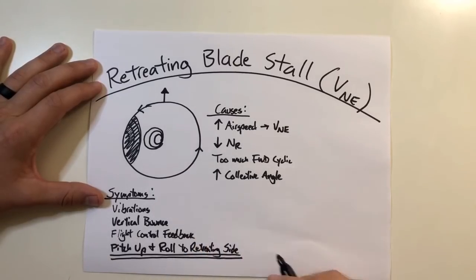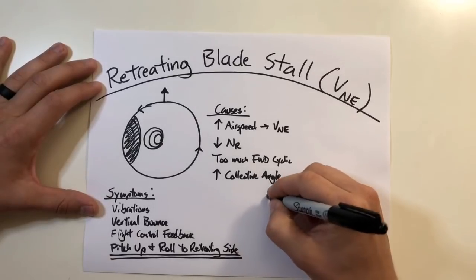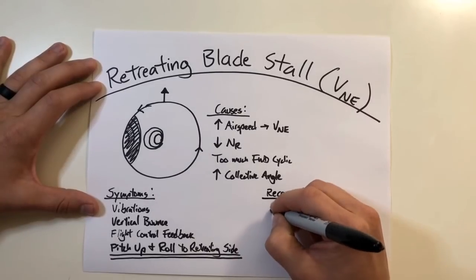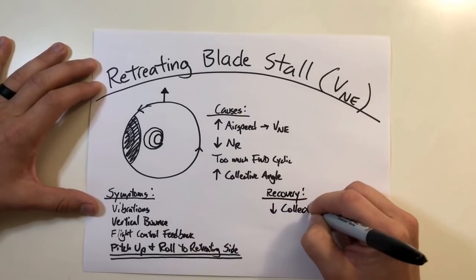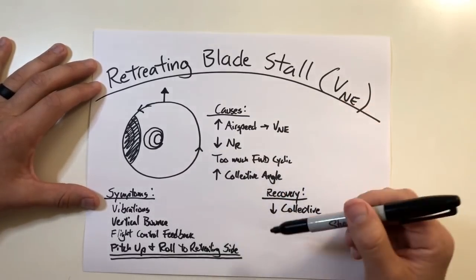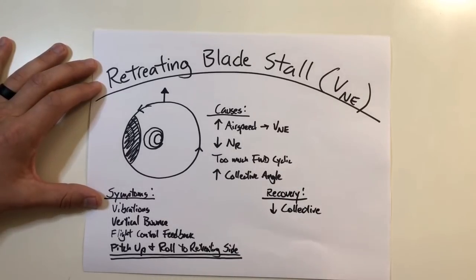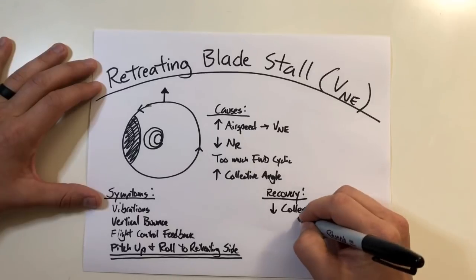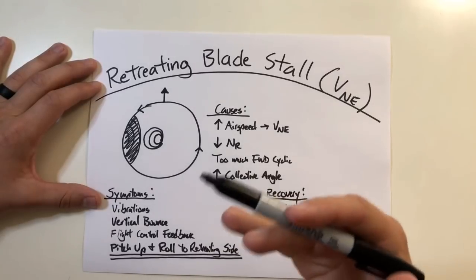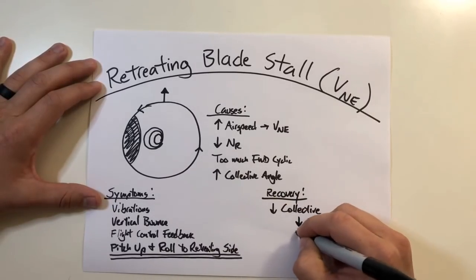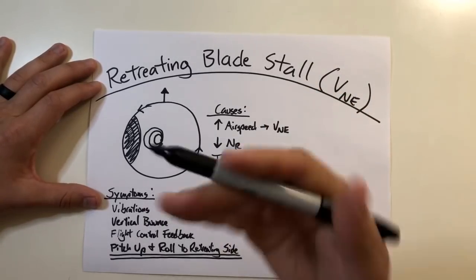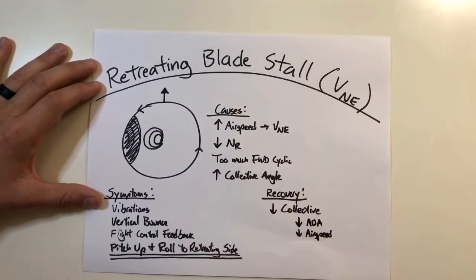If this were to occur — and obviously you want to avoid this at all costs — there are a few steps to recovery. By far the number one first thing you should do is lower the collective. By reducing the collective right away, you're doing three things: first, you're reducing the angle of attack in the blades, potentially reducing that stalling effect; second, you're going to reduce your airspeed, taking away another cause and giving your retreating side a chance to try to catch up.